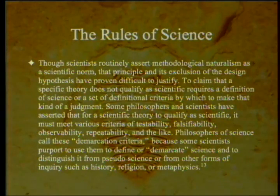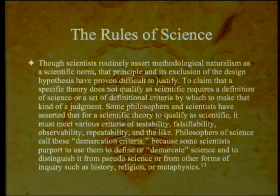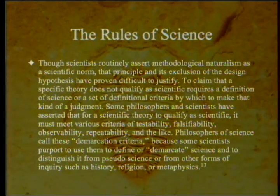Some philosophers and scientists have asserted that for a scientific theory to qualify as scientific, it must meet various criteria of testability, falsifiability, observability, repeatability, and the like. Philosophers of science call these demarcation criteria, because some scientists purport to use them to define or demarcate science and to distinguish it from pseudoscience or from other forms of inquiry such as history, religion, or metaphysics.